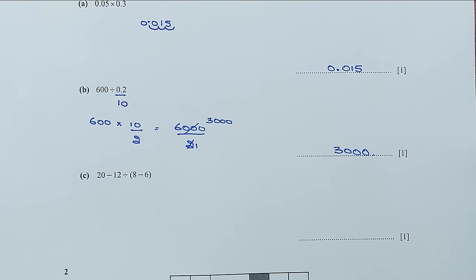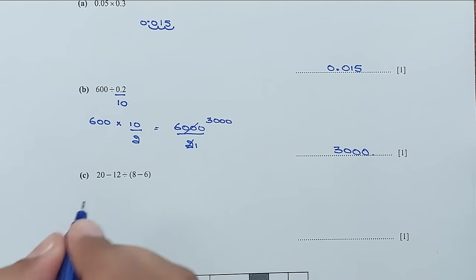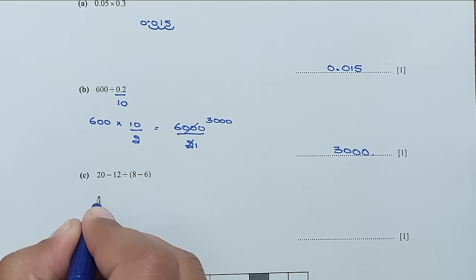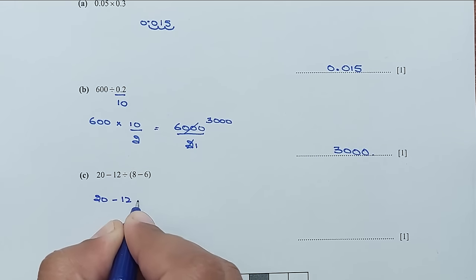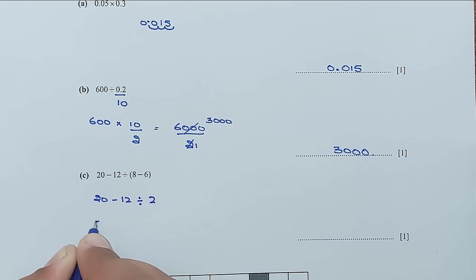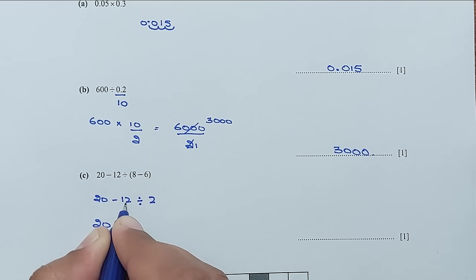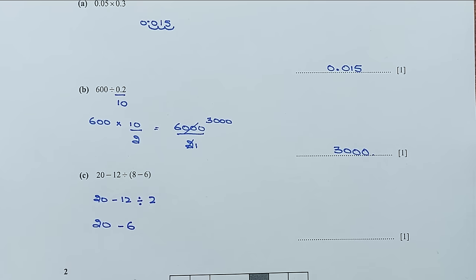Now for part C, we have to use BODMAS. First we have to solve the brackets. So 20 minus 12 divided by 8, take away 6 would be 2. And 20 subtract 12 divided by 2: 2 times 6 would be 12. And 20 take away 6 would be 14.